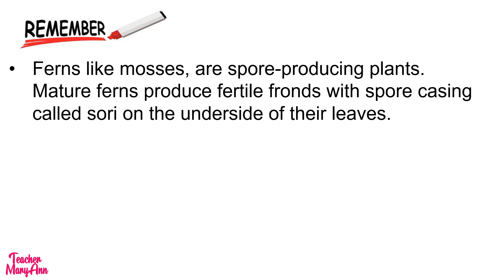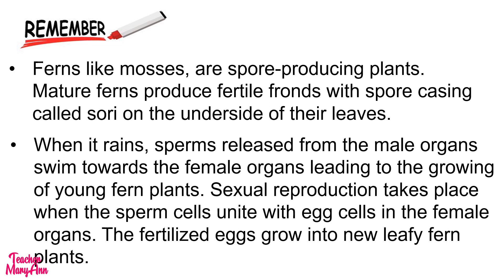Ferns, like mosses, are spore-producing plants. Mature ferns produce fertile fronds with spore-casings called sori on the underside of their leaves. When it rains, sperm released from the male organs swim towards the female organs, leading to the growing of young fern plants. Sexual reproduction takes place when the sperm cells unite with egg cells in the female organs. The fertilized eggs grow into new leafy fern plants.